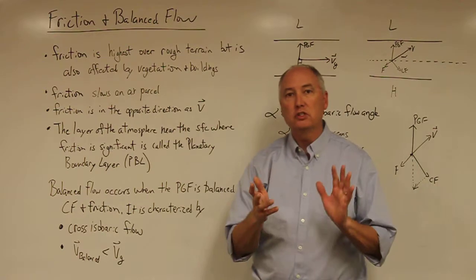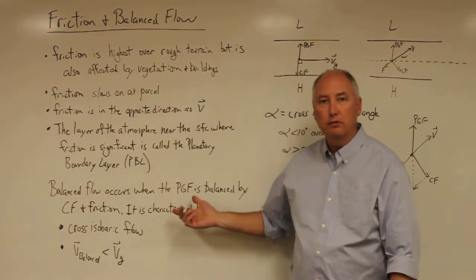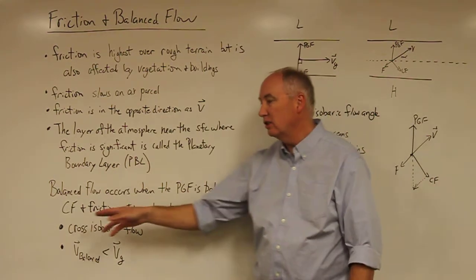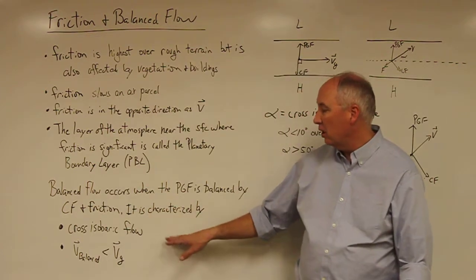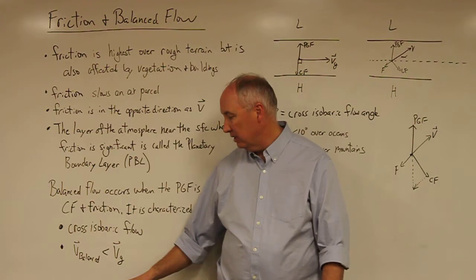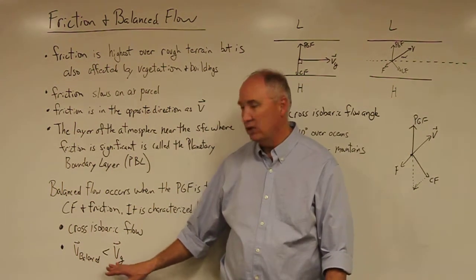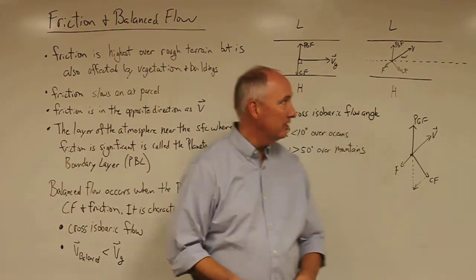Balance flow, which is the topic for today's discussion, occurs when the pressure gradient force is balanced by a combination of the Coriolis force and friction. Balance flow is characterized by cross isobaric flow and the fact that balance flow is weaker than the geostrophic flow because of the addition of friction to the system.